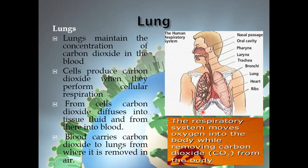The carbon dioxide produced as a result of cellular respiration is diffused into the tissue fluid, and then from there into the blood. Blood carries carbon dioxide to the lungs, from where it comes out of the body — the carbon dioxide is removed into the air. This picture shows the respiratory system, in which the lungs move oxygen into the body while removing carbon dioxide from the body.